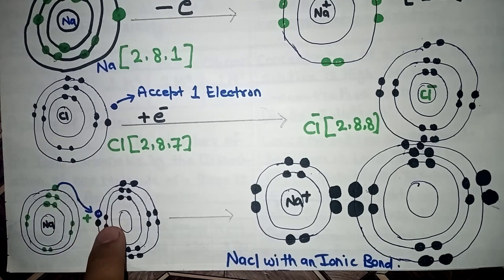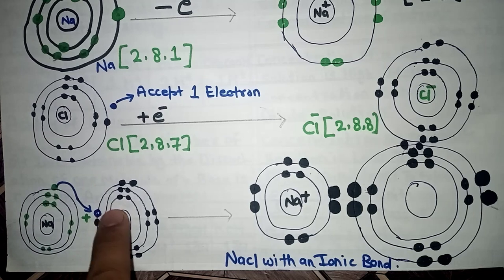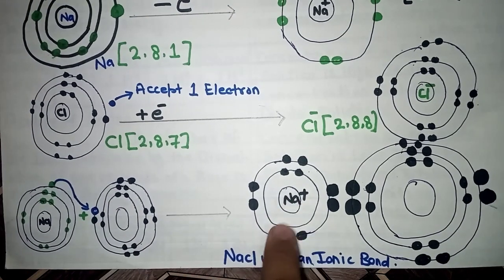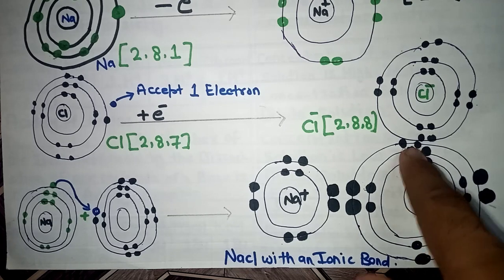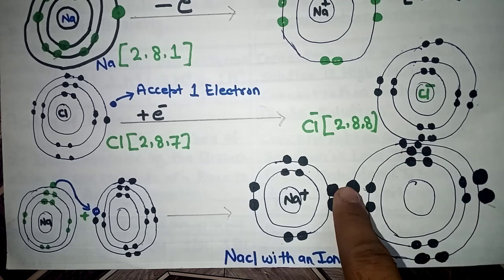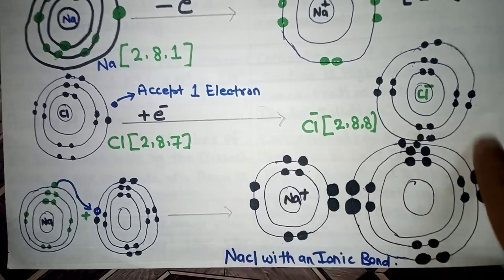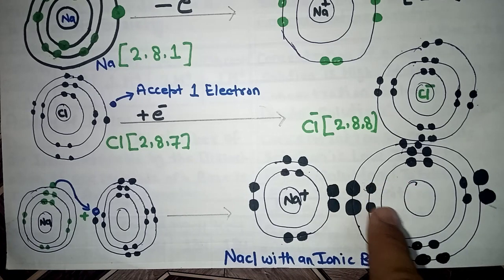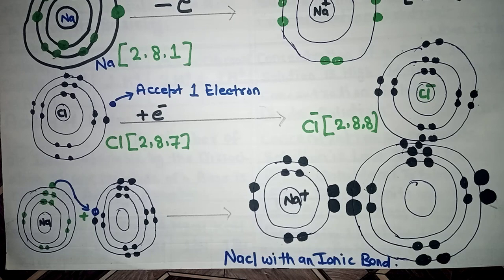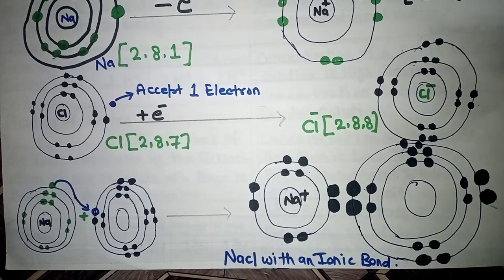The extra electron from sodium's third shell goes into chlorine's shell and fills it completely. So the final condition: sodium has 2 in the first shell and 8 in the second, while chlorine now has 2, 8, 8 — 18 electrons total with the outermost shell fully filled. This is how ionic compounds are formed. The bond between them exists because of the force of attraction — opposite charges attract each other. This completes the formation of sodium chloride.